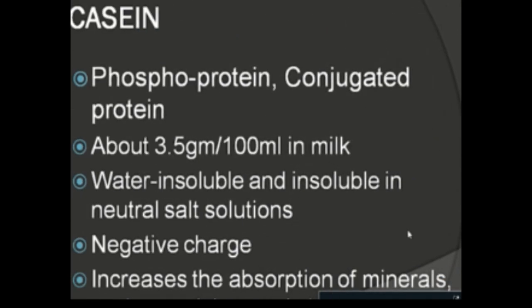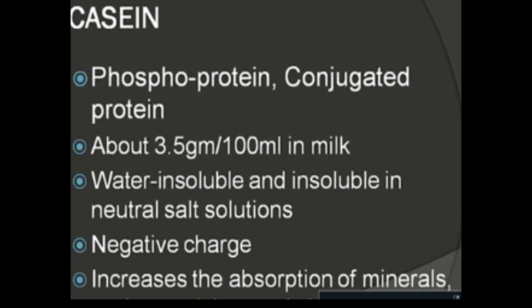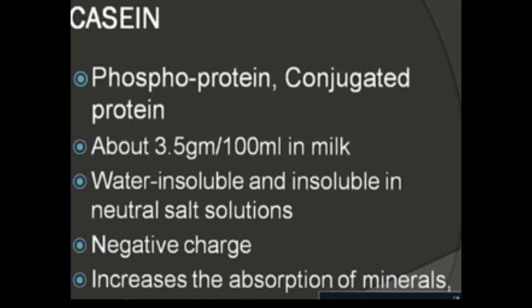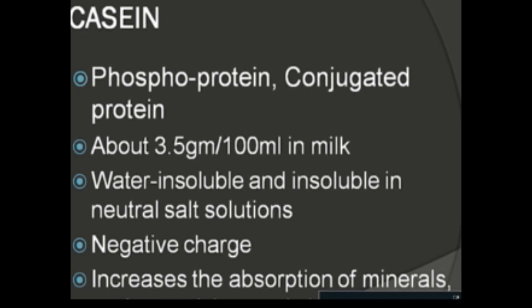Now, what is casein? It is a phosphoprotein which is conjugated with the amino acid serine, and it is mainly found in mammalian milk at a concentration of about 3.5 grams per 100 ml. It carries a negative charge, is water insoluble, and is also insoluble in neutral salt solutions. It increases the absorption of certain minerals like calcium and phosphorus.